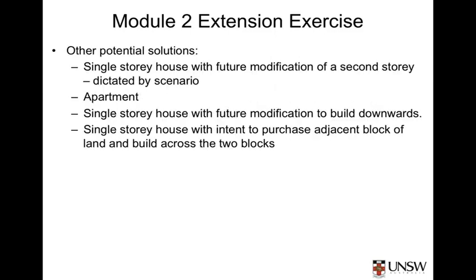Before we continue, let's just pause and observe. The scenario stated that the solution for the problem is a single storey house, with the ability to be modified as the owner's future needs change. It's assumed that this is what the owner has decided as a result of the consideration of a range of other options. Remember, in systems engineering it's important not to press ahead with any particular physical solution before exploring all the valid options.